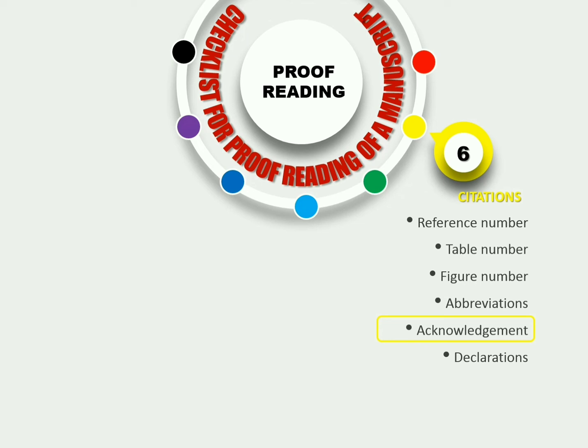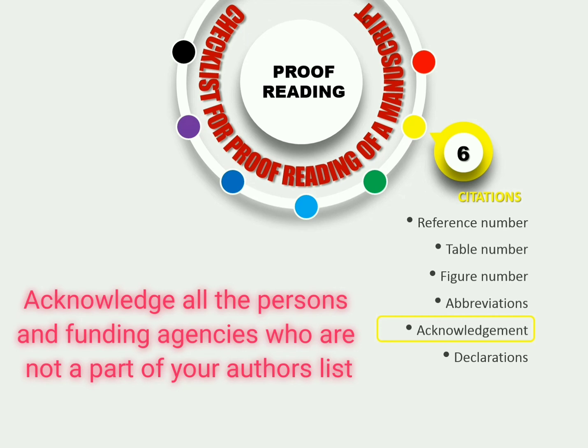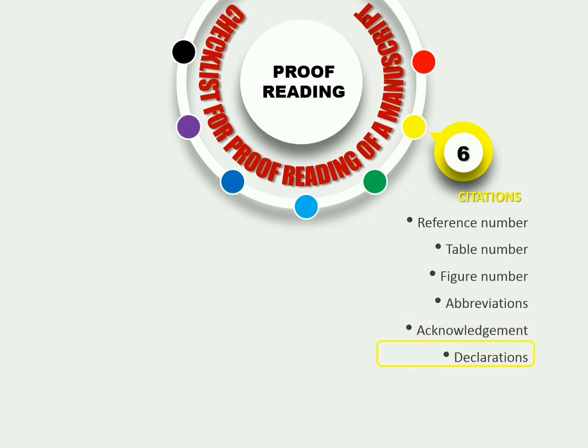Further, the acknowledgement should be checked. It is also important when you did the work in any funded project. All the persons who directly or indirectly contributed in your work and not as part of your author group should be acknowledged after conclusion. Furthermore, you should declare the conflict of interest if any. If you have none to declare, you should just write a sentence: none to declare.